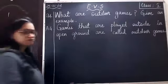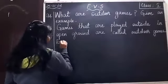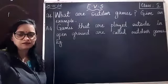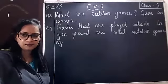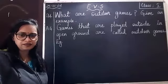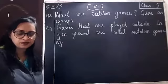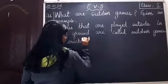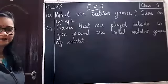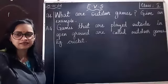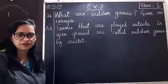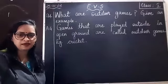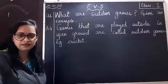Now leave a finger space, write down capital E-G, for example. Write down C-R-I-C-K-E-T. Cricket.